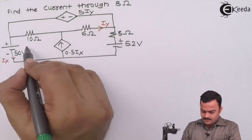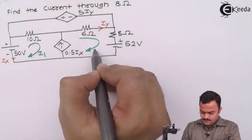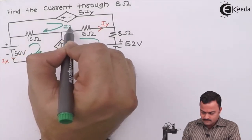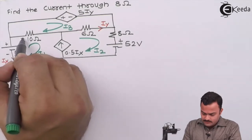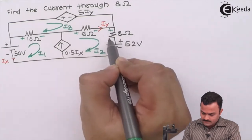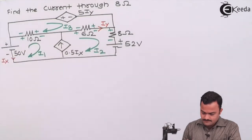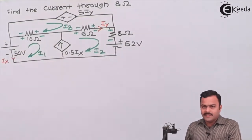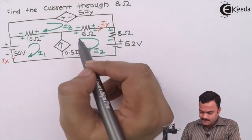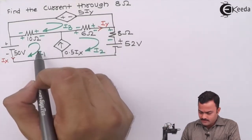Three meshes are given, so we will have three mesh currents I1, I2, and I3. As per the currents, we will have the voltage drop across each and every resistor present in the circuit. Now we are ready to apply KVL, but the problem is that in mesh 1 a current source is present. The same is the problem with mesh 2 — there is a current source which is shared between mesh 1 and 2.